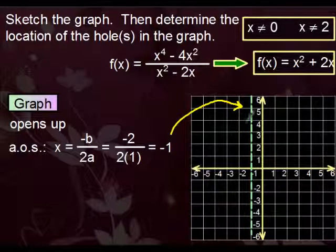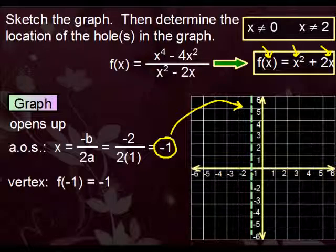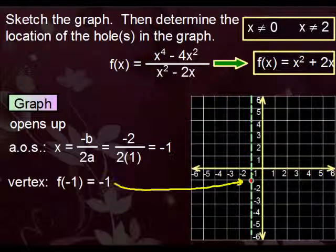So the vertex lies somewhere on this line. Since it lies somewhere on this line, we already know the x coordinate, negative 1. Go ahead and plug that into our simplified version. So that way we can get the y coordinate. Do that and we wind up with negative 1. So negative 1 comma negative 1 is the location of the vertex.